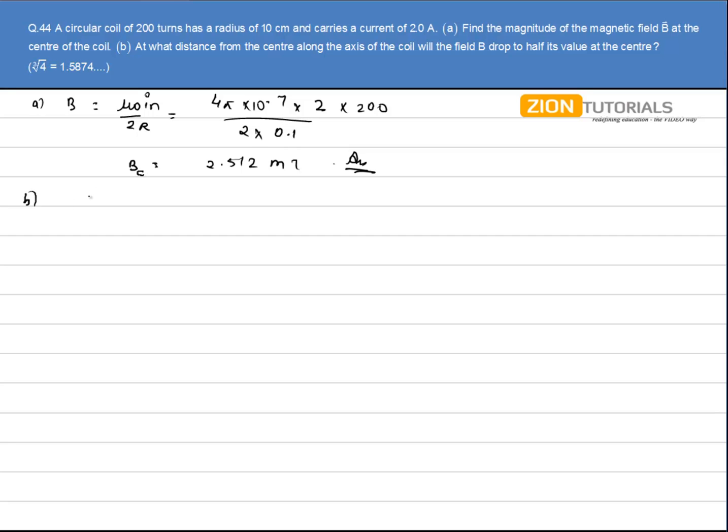We know that magnetic field at any point on the axis of the circular loop is given by Mu0 i N into A square divided by 2 times A square plus D square to the power 3 by 2, where A is the radius and I is the current flowing. And according to condition,